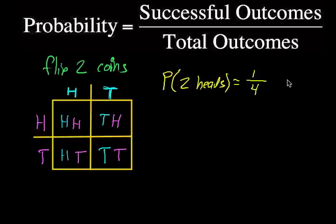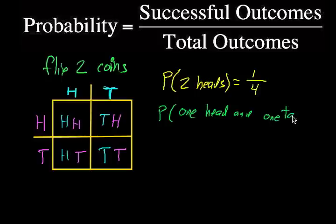What about the probability of getting one head and one tail? Again, take a look. We have heads-heads, heads-tails, tails-heads, tails-tails. One head and one tail comes up two times, two times out of the four possible outcomes, which reduces to one-half, one-half probability.